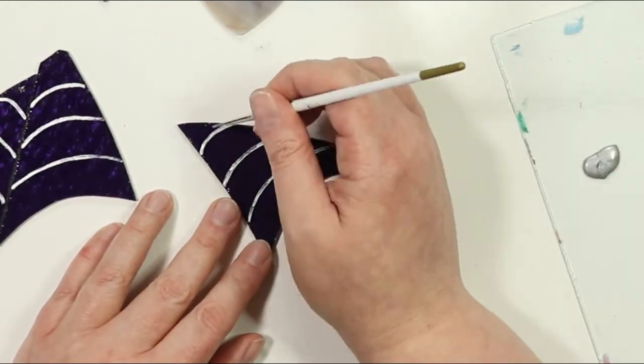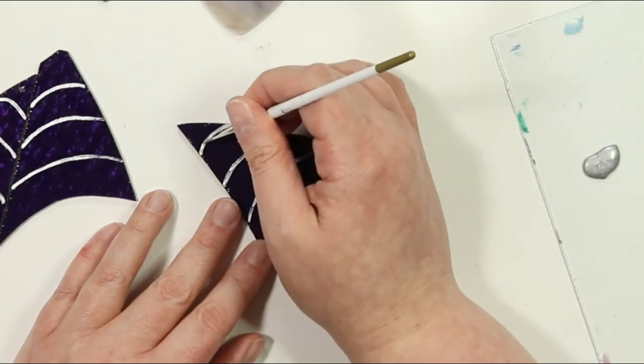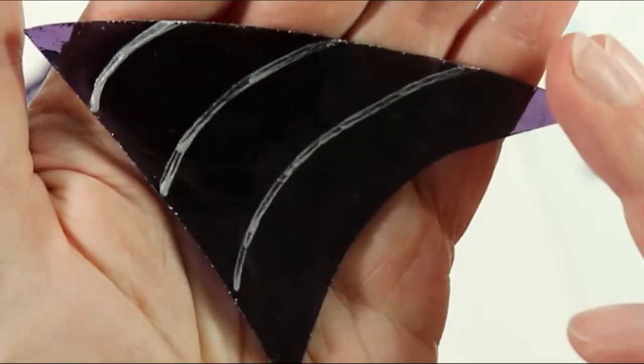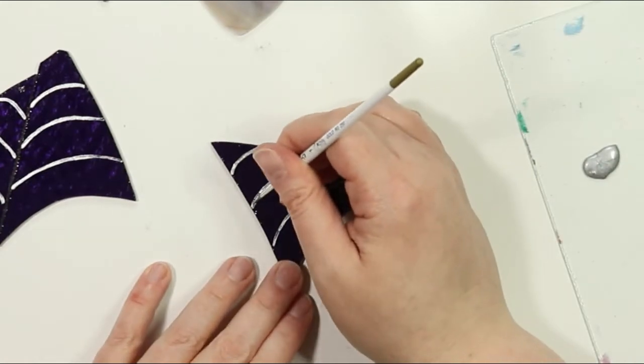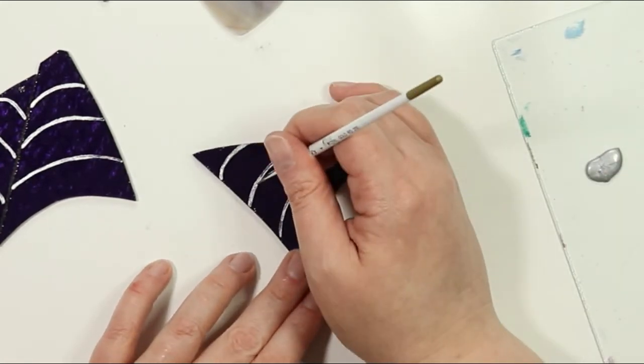It's easy to tell which line I've already painted twice now and which ones only have one coat of paint. This is why I always choose to do a second coat of paint, is to help even out that color.